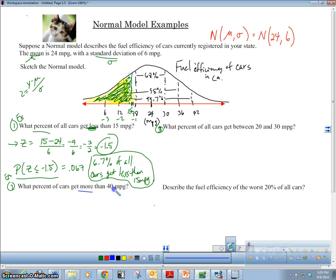Let's do number two. What percent of cars get more than 40 mpg? We're going to find our z-score again. This time we're going to use 40 because we're looking right here - this is 40. We're going to find the z-score for that. We get 2.67. So we want the percent of all cars greater than 2.67.